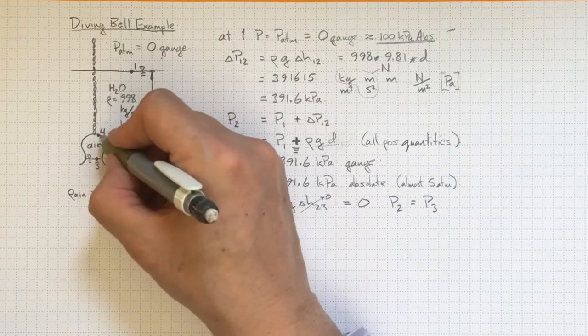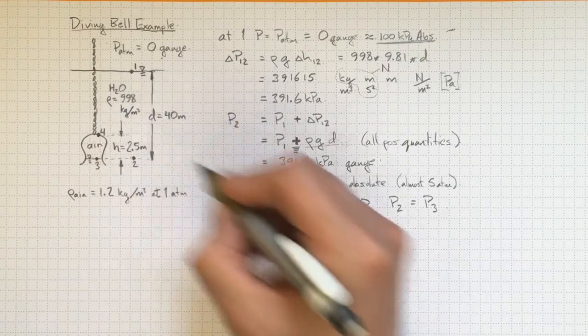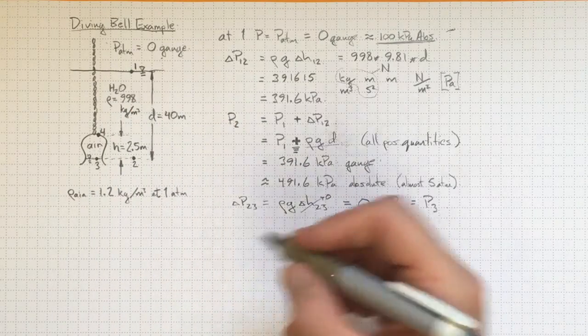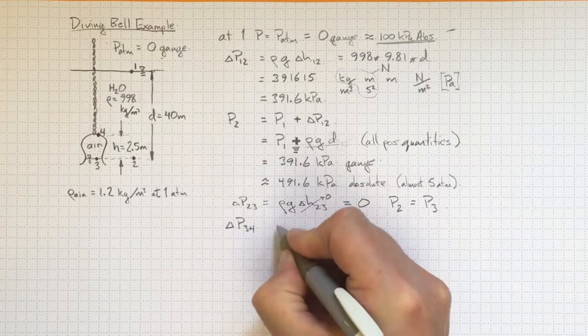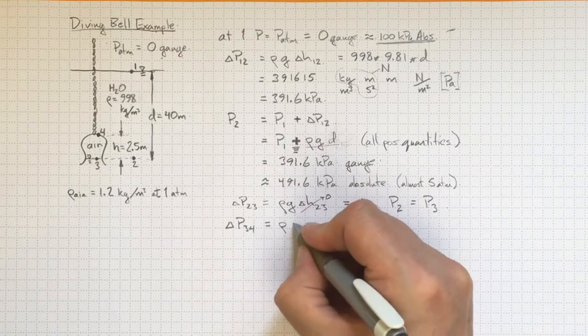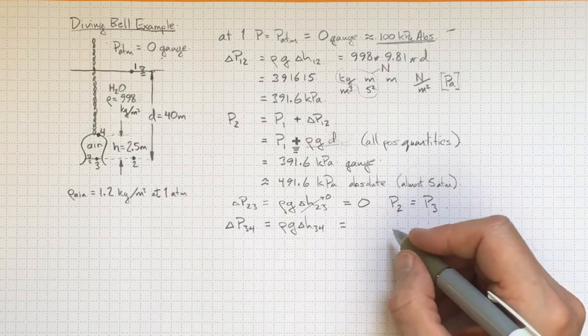Finally we can try to figure out what is the pressure at location 4 at the top of the diving bell. We can get the pressure change from 3 to 4 equal to rho g delta h 3 to 4.